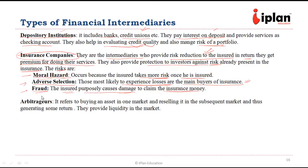Another kind of intermediary is arbitragers. They keep looking for arbitrage opportunities. If there is an asset priced differently in two different markets, they buy where it is cheap and sell where it is expensive. This buying and selling gives them an arbitrage profit, and to the market they are providing liquidity.